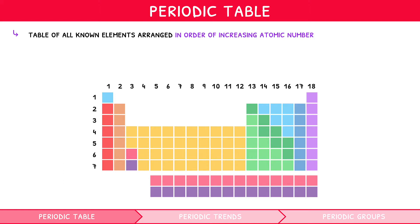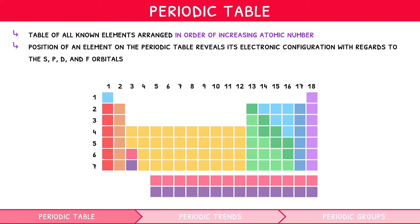As you will know from our IB Chemistry topic 2 video series, the position of an element on the periodic table reveals its electronic configuration with regards to the s, p, d, and f orbitals.